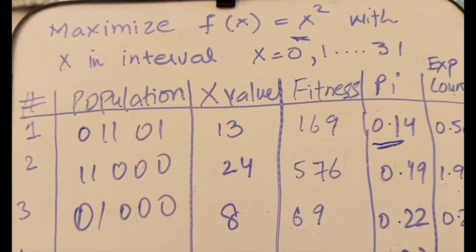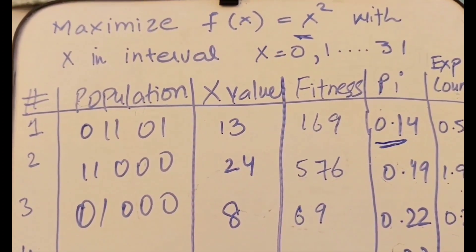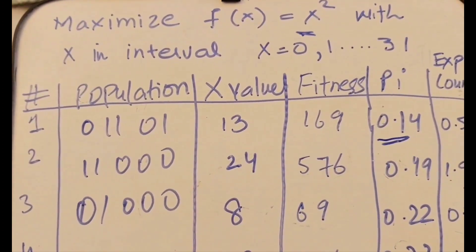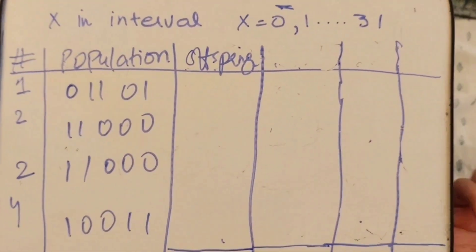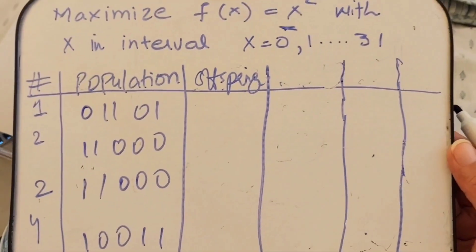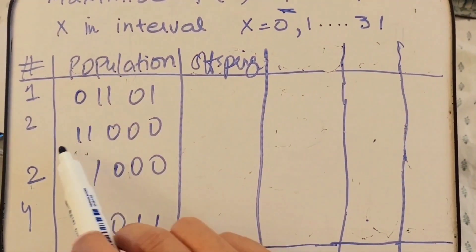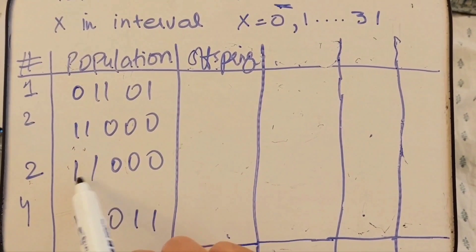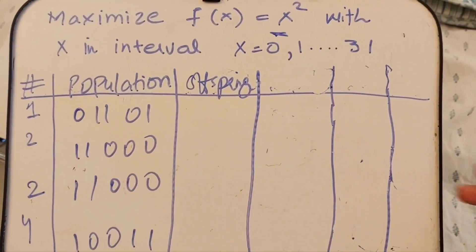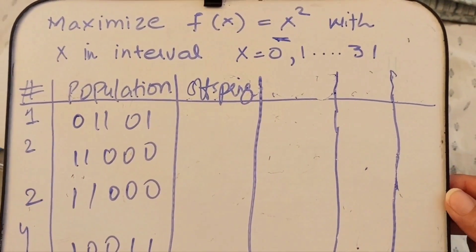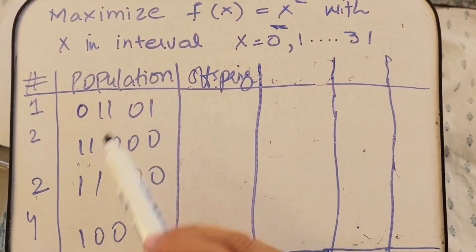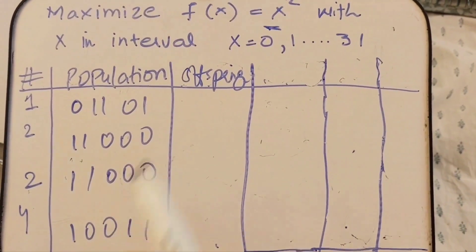We have now completed the roulette wheel selection step, and we can identify which parents are fit and which should be discarded. When generating the next population, I repeat string number two twice since it has the highest count, and I discard string three because it has the lowest count.